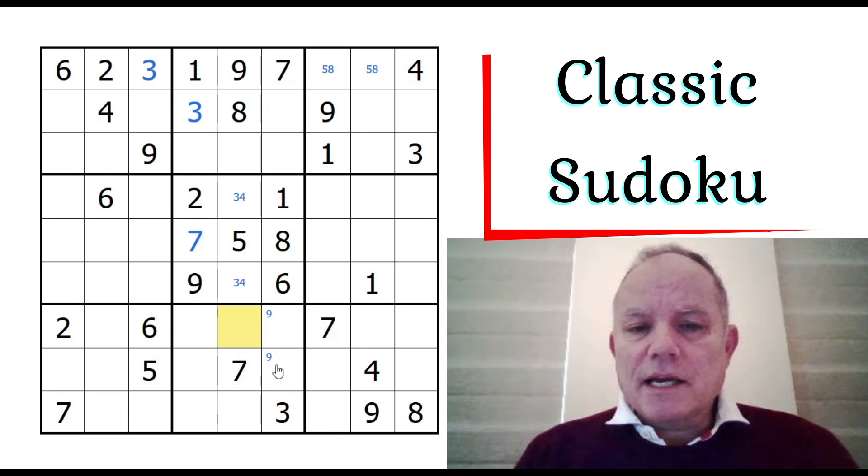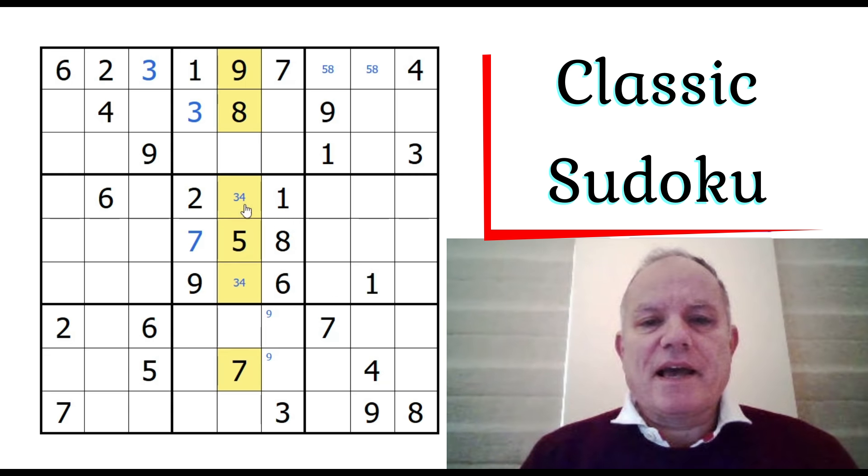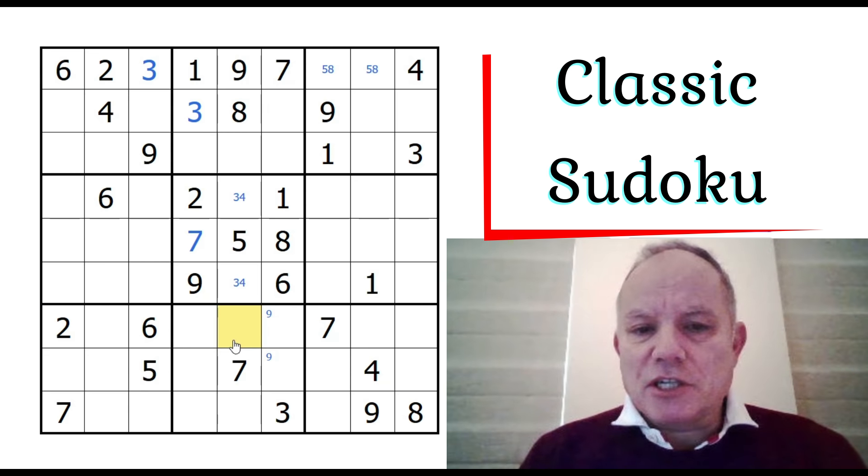Some people were asking how I spot naked singles so quickly. When I do, it's often because I'm focusing on what has become quite a restricted column. We've already got effectively six numbers placed, so there are only three cells left and they have to be one, two, and six. This one has been eliminated, so that's a one.